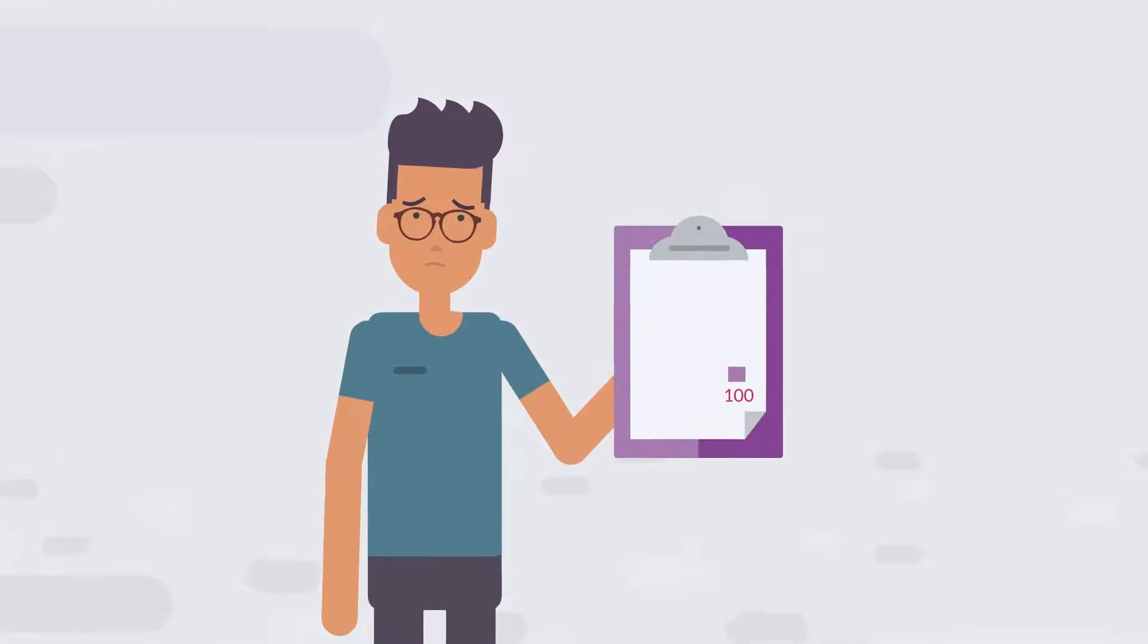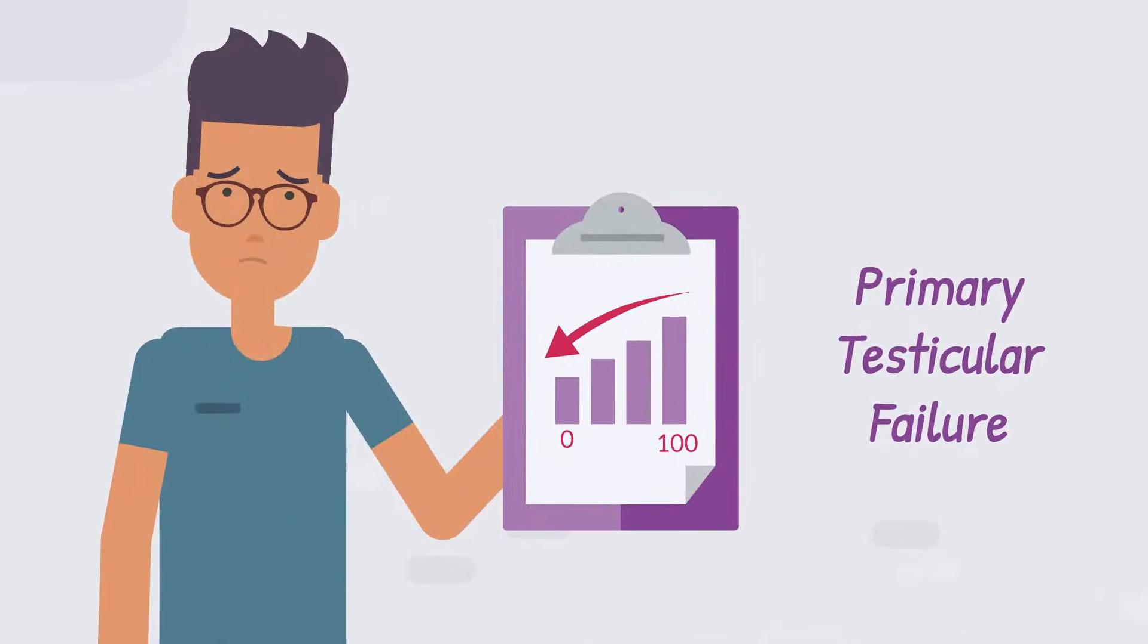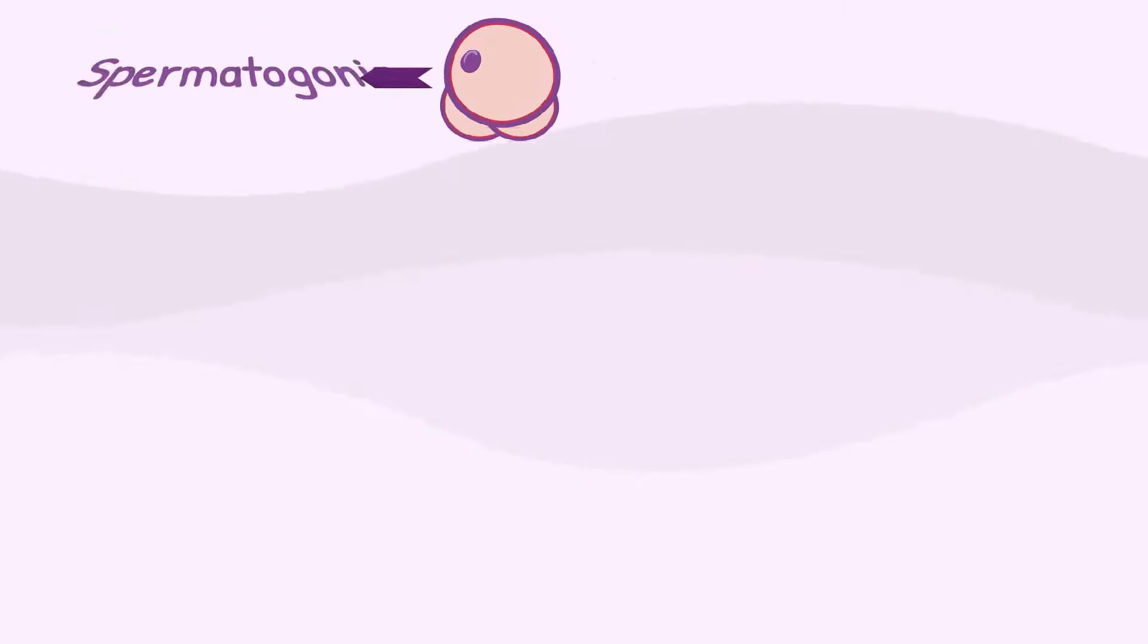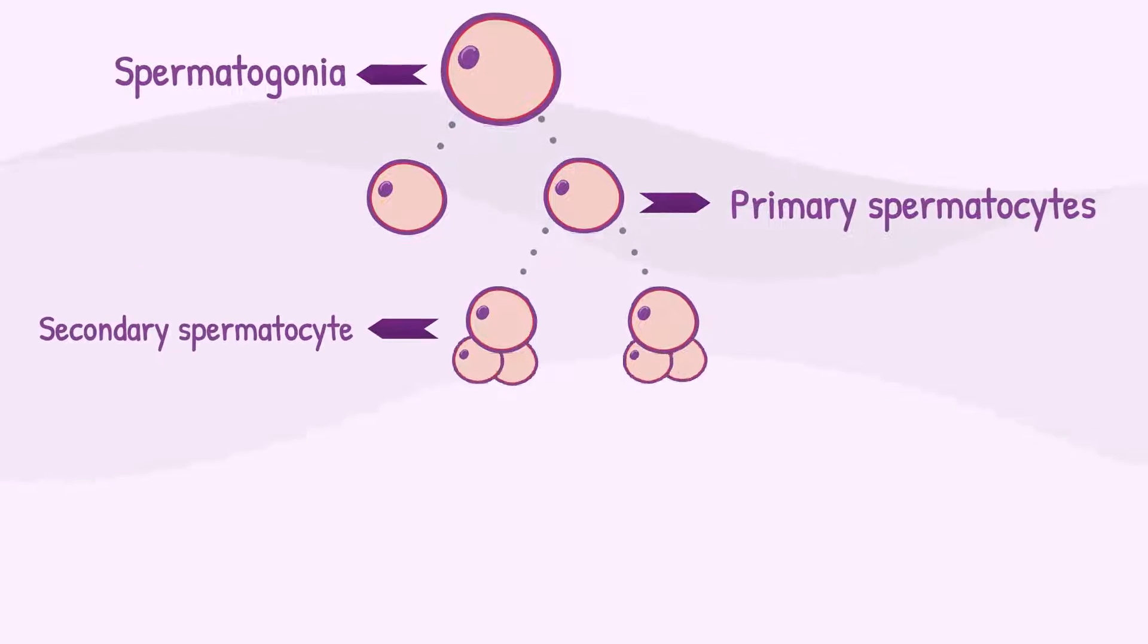Prolistem is a novel approach for treating non-obstructive azoospermia-type primary testicular failure. Sperm production starts from spermatogonia stem cells, which divide and differentiate to sperm within 80 days.